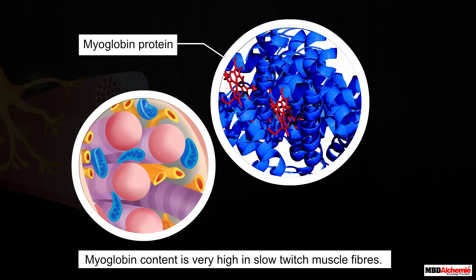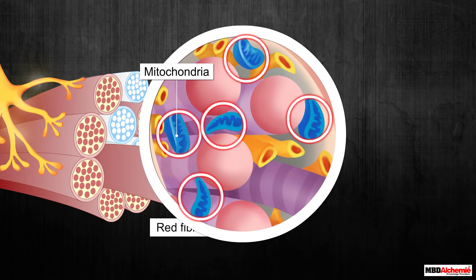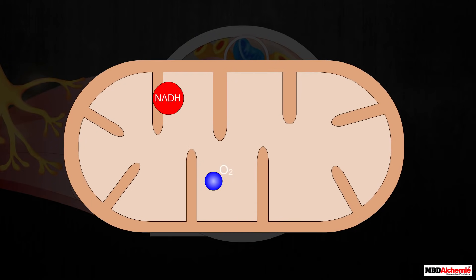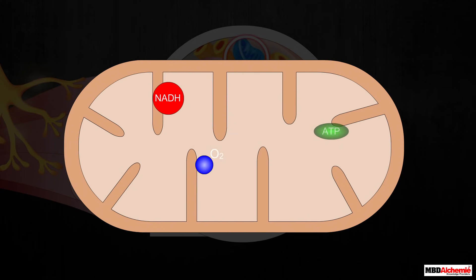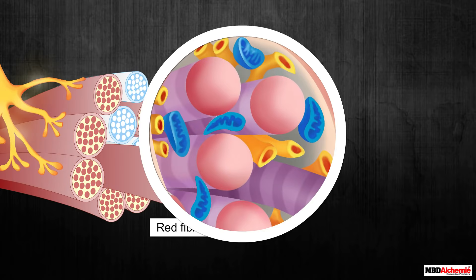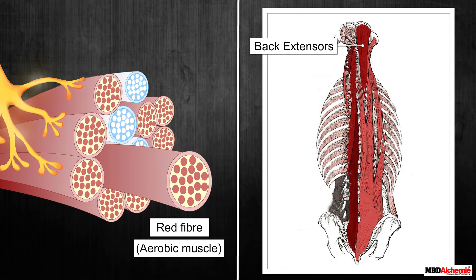Myoglobin content is very high in slow twitch muscle fibers, so these muscles are also called red fibers. The second component is mitochondria — these muscles contain a large number of mitochondria which use the stored oxygen for ATP production. These muscles are therefore also known as aerobic muscles. An example is the extensor muscle on the human back.